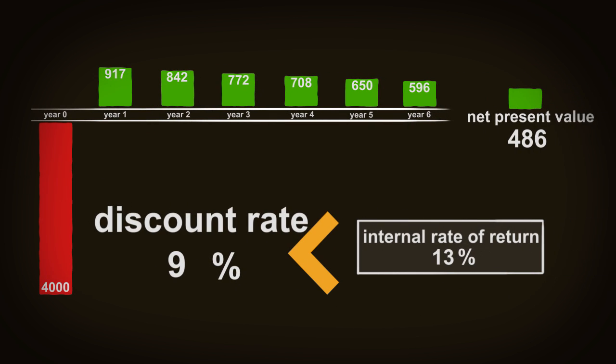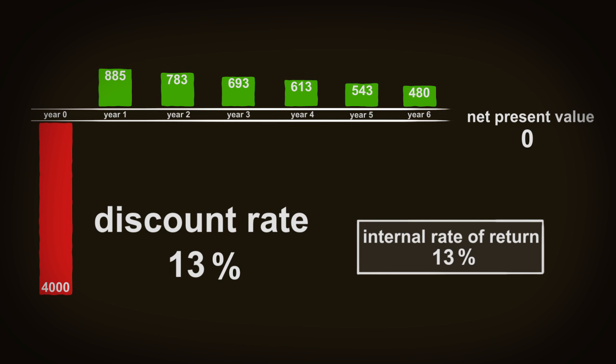The internal rate of return is the discount rate where the net present value turns from positive to negative. So whether the internal rate of return is greater or lesser than the discount rate is also a sign of whether to accept or reject an alternative. It's the same information being communicated. So that's not really anything new. What else can the internal rate of return communicate?